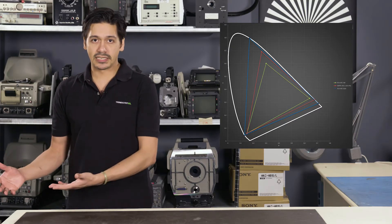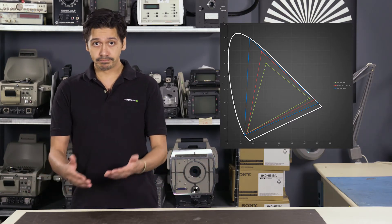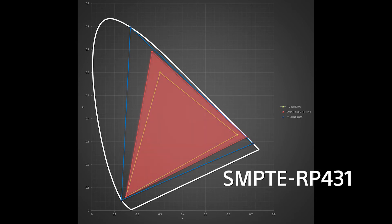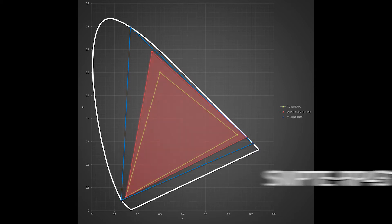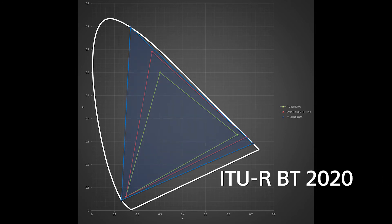Depending on what the content is destined to be shown on or as, there are different standards that may be required. For digital cinema, they use a larger gamut defined by its full name as SMPTE RP-431, which is a wider gamut commonly referred to as P3. You may also have heard about another gamut called 2020, which is newer and even wider — more crayons — and encompasses way more than P3 or 709, and is common to see paired with HDR work or UHD and 4K streaming.